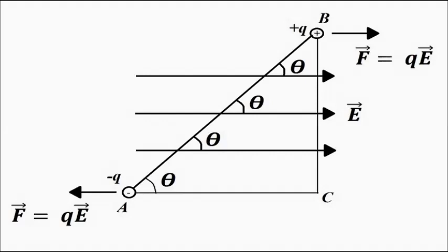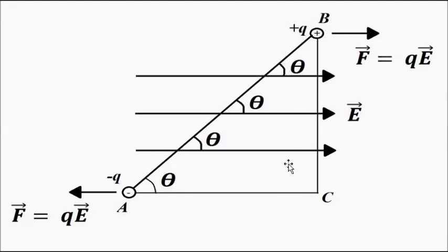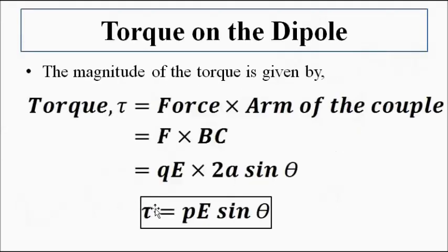As discussed in the previous video on torque, the force acting on +q and the force acting on −q are each qE, equal in magnitude but opposite in direction, constituting a couple that rotates the dipole clockwise, trying to align it with the electric field. The torque acting on this electric dipole is force multiplied by the perpendicular distance — the arm of the couple — which gives tau equals pE sin theta.